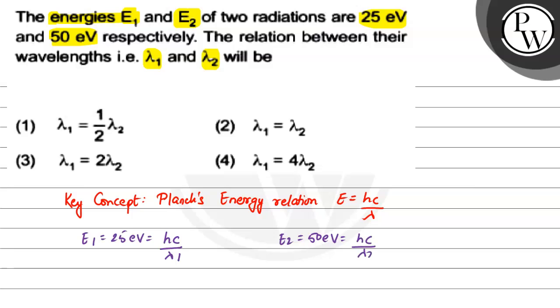This can be represented as lambda 1 is equal to hc by lambda 2. We can write 1 by 2 is equal to lambda 2 by lambda 1. This can be represented as lambda 1 is equal to 2 times lambda 2. So this is our final relation.